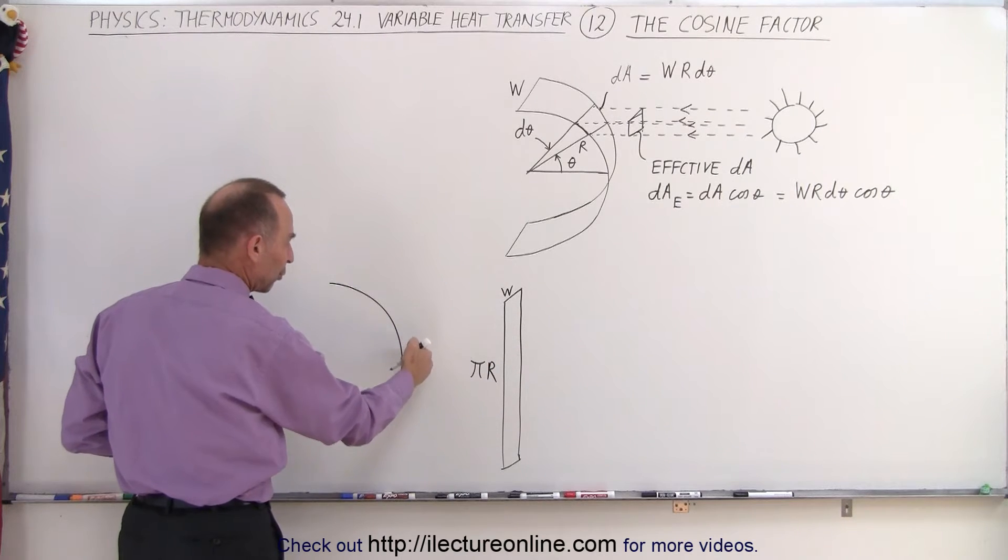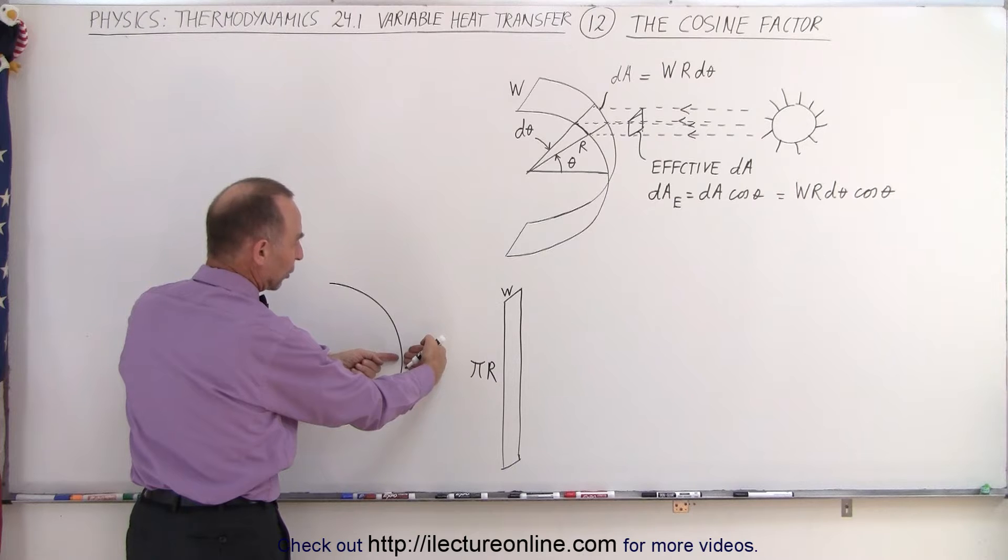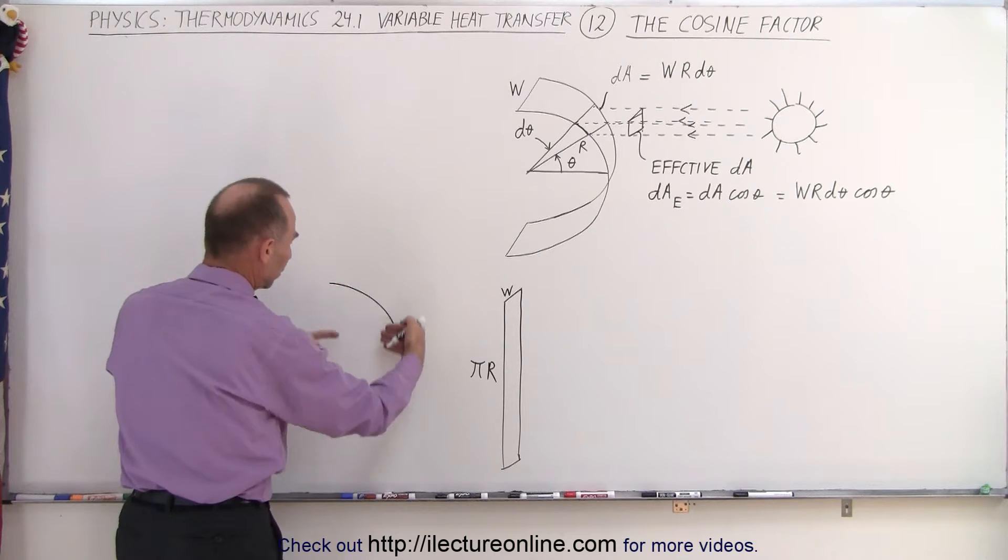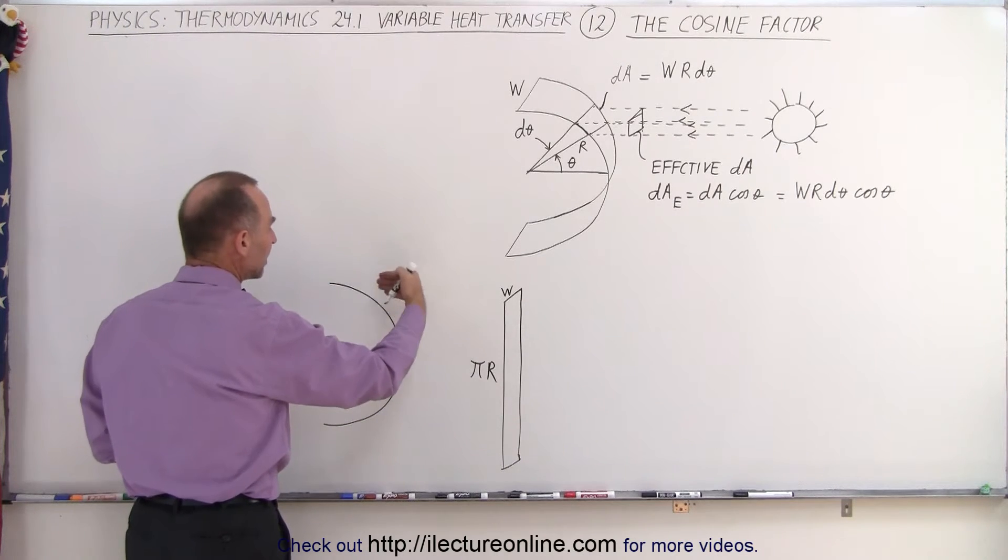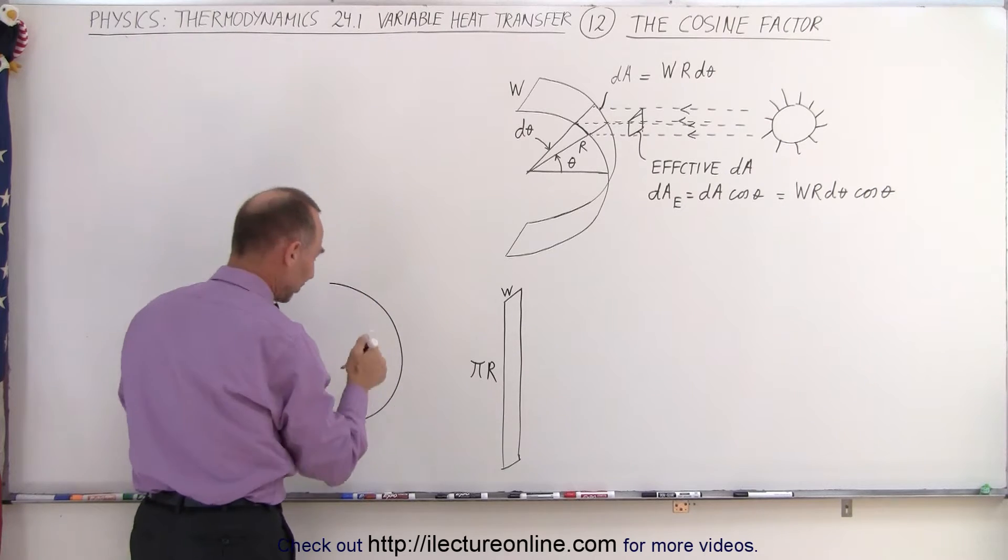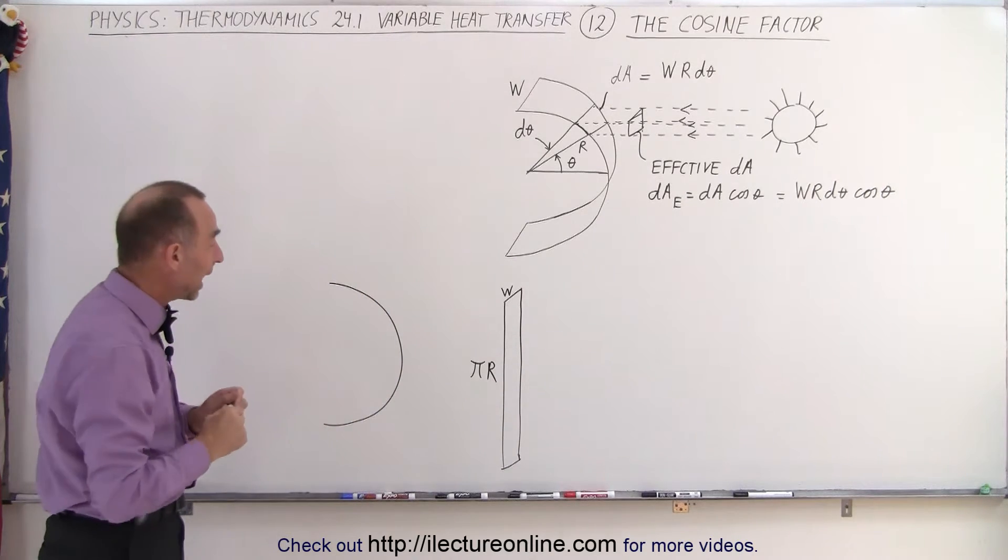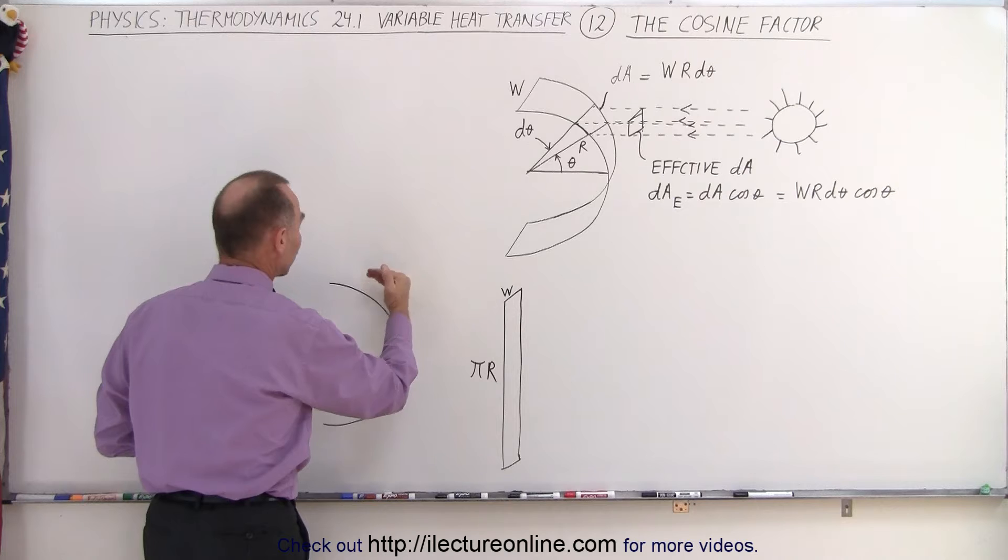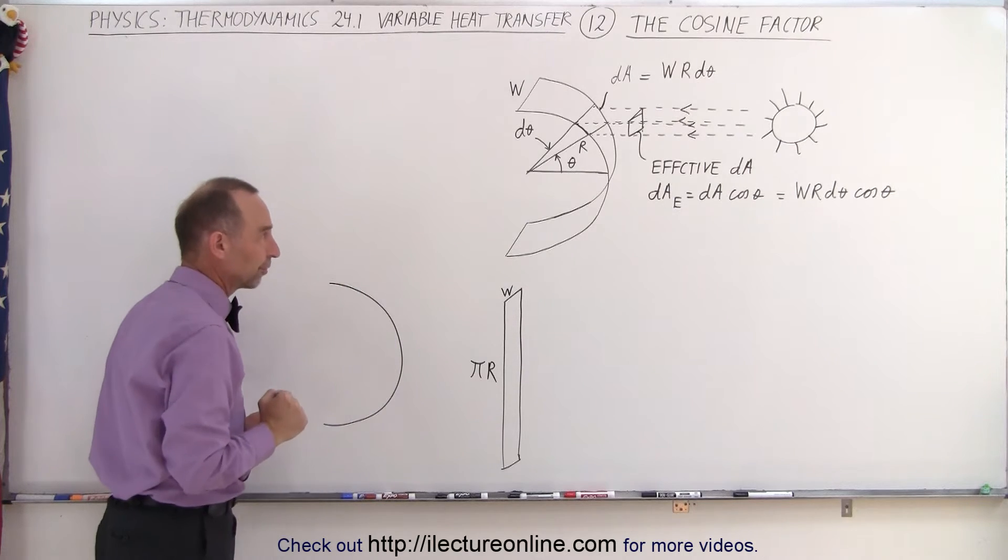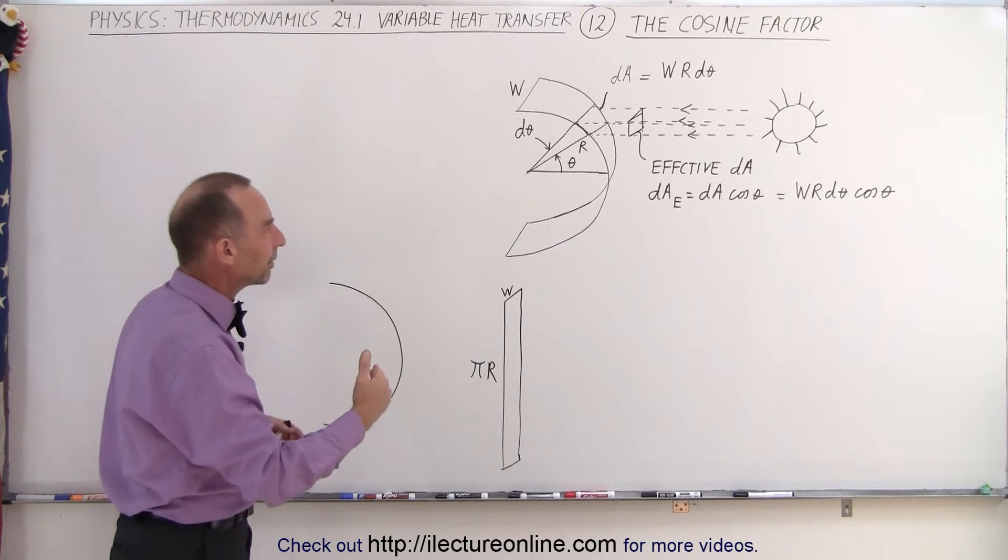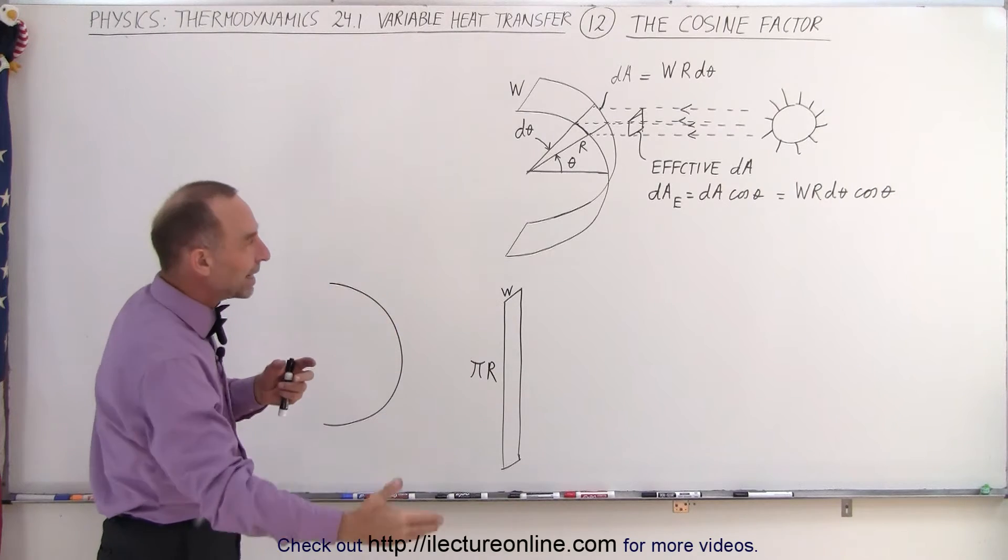You can see that we have direct perpendicular radiation right here at the equator, but towards the pole regions, you can see that the radiation has very much less of an effect because the angle between the radiation and the perpendicular to the surface.